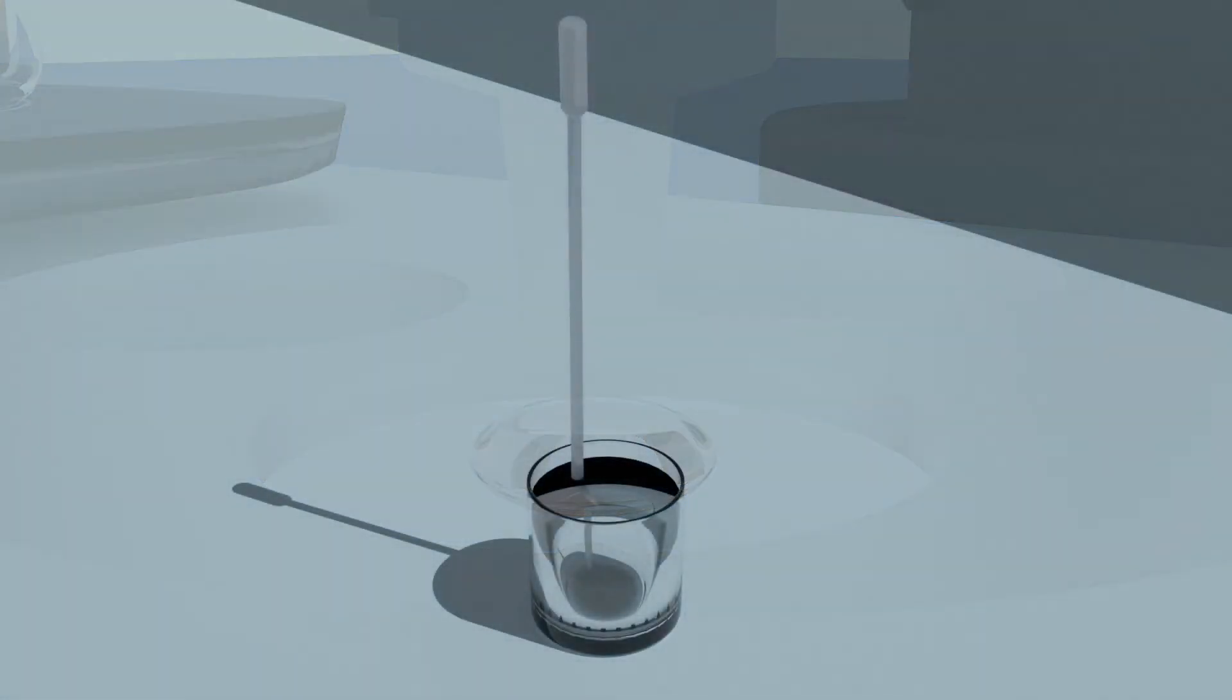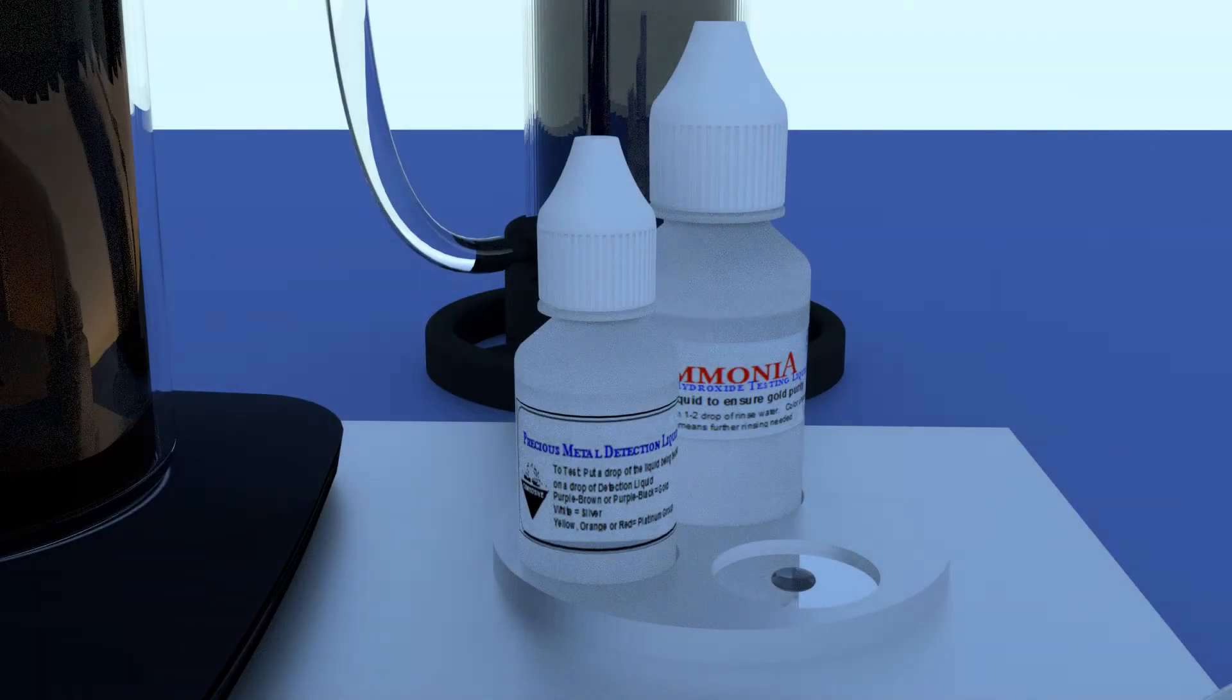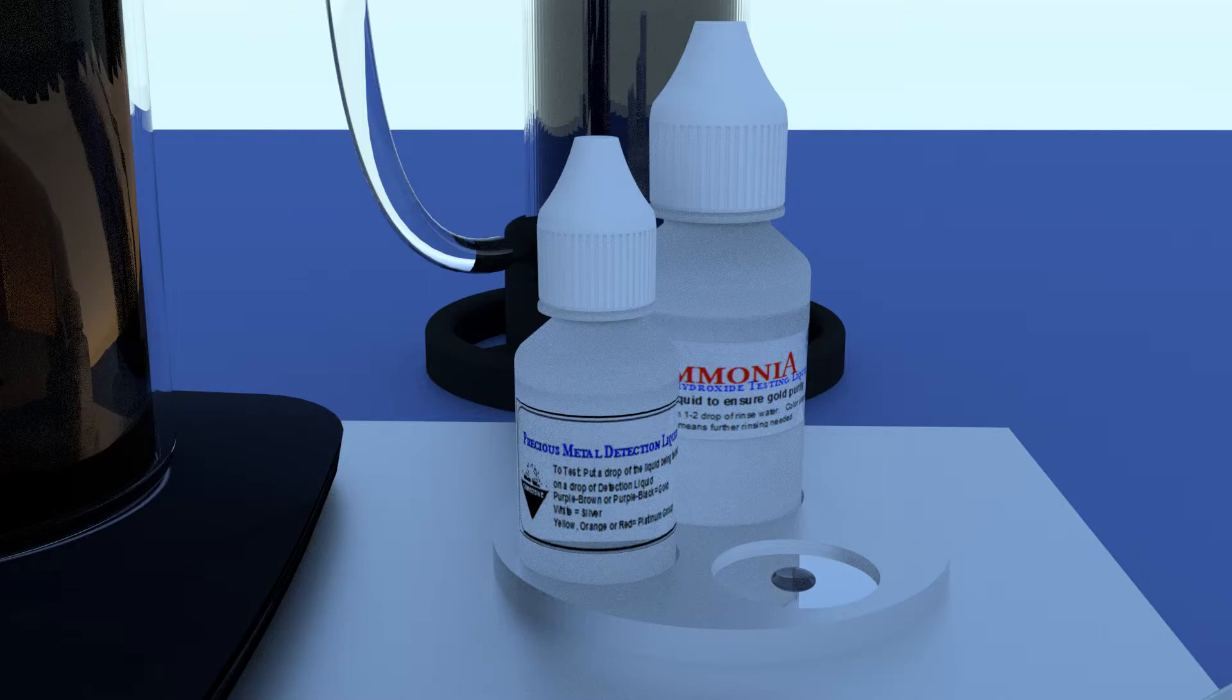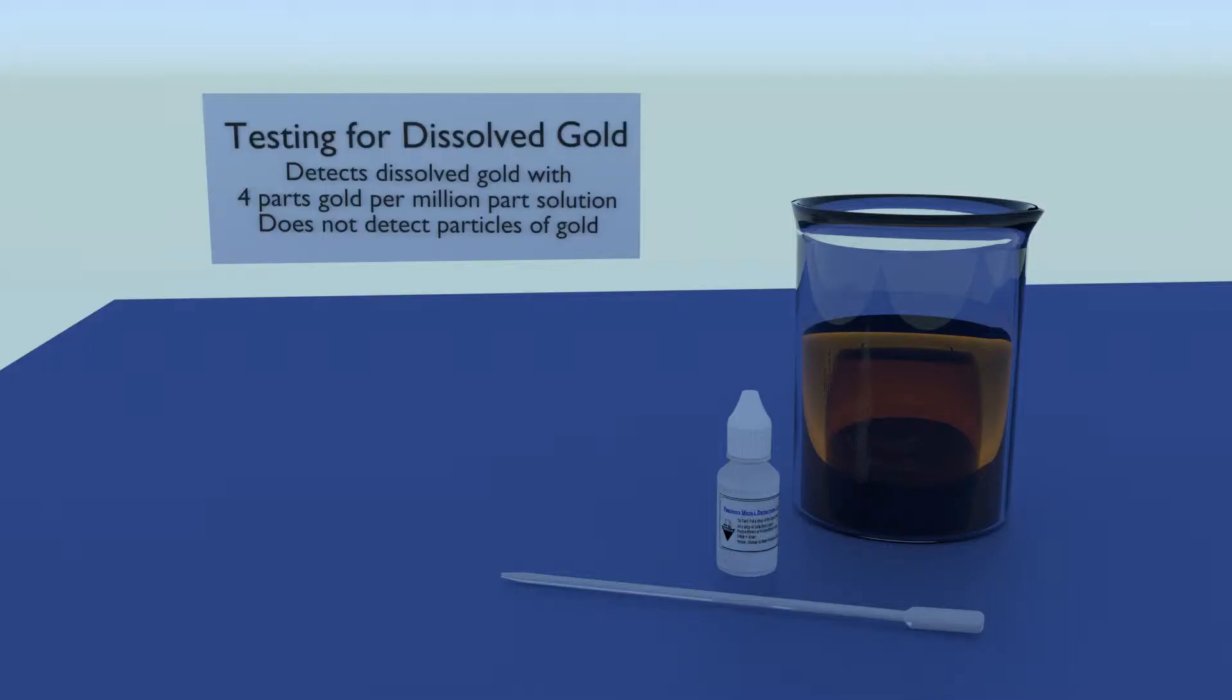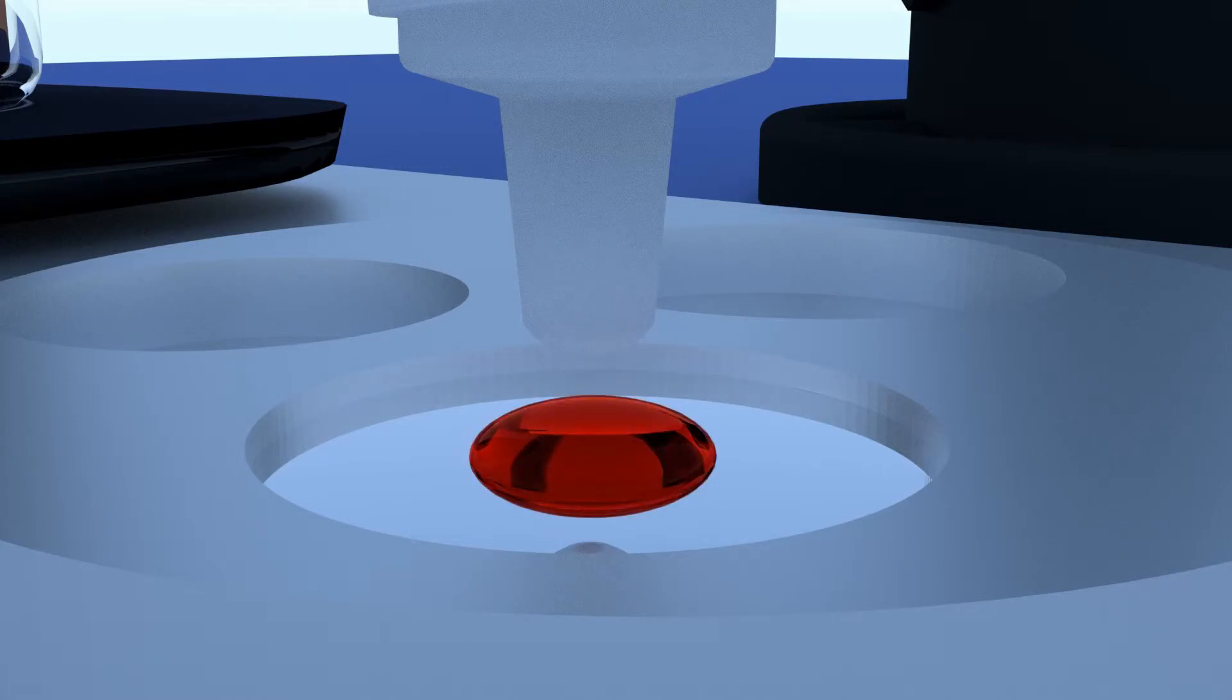You can run this test as often as you like. Just be sure to clean the pipette inside and out between tests. Cleaning ensures that you don't get a false positive. This test is sensitive to within four parts of precious metal per million parts of solution, and it will also detect dissolved platinum group metals with different color changes for different precious metals.